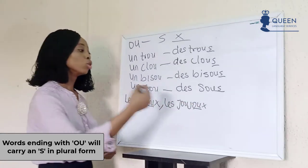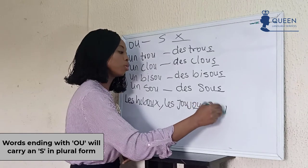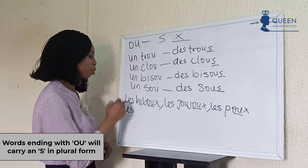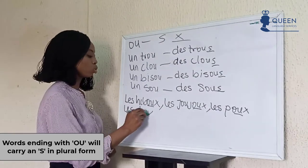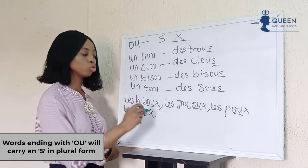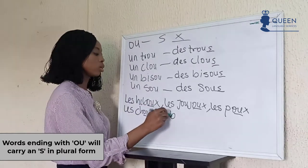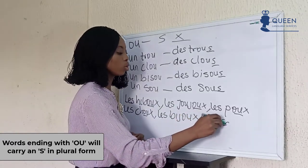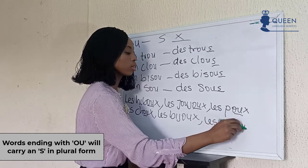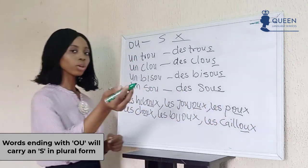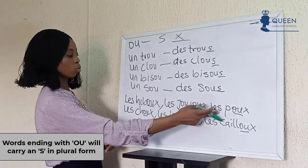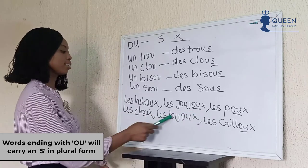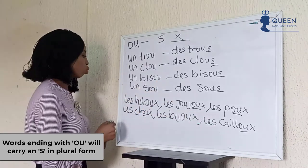The seven exceptions for -ou words taking -x include: 'les joujoux,' 'les poux,' 'les choux,' 'les bijoux,' 'les cailloux.' That's about six or seven of them — un, deux, trois, quatre, cinq, six — and 'les genoux.'